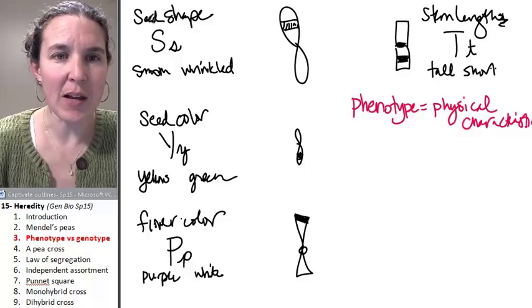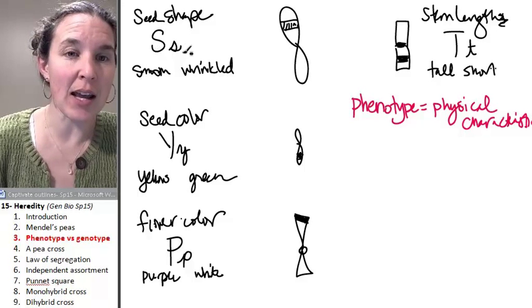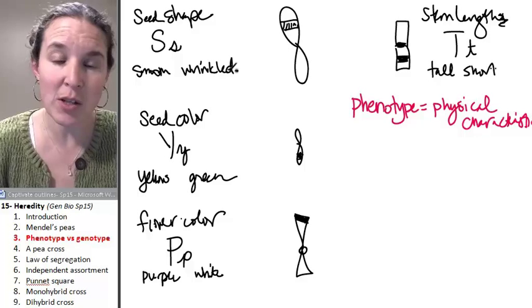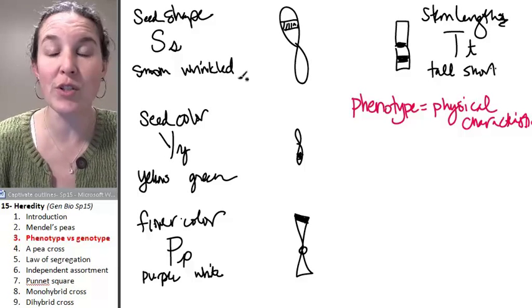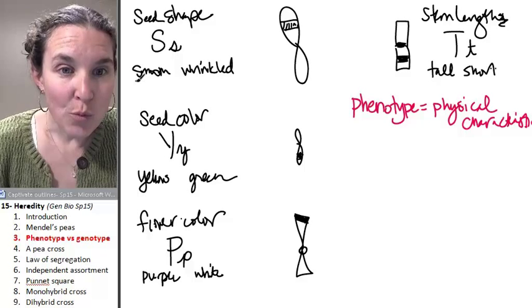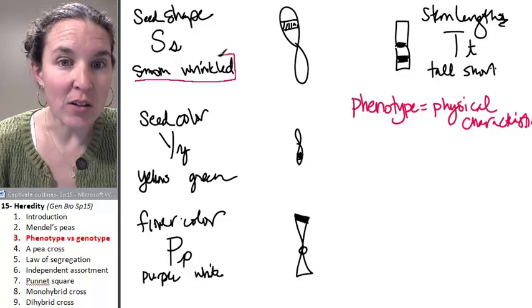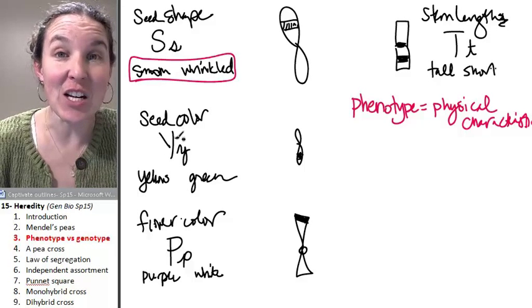Now, look at each of these. I've got seed shape, I've got SS, I've got a chromosome. I've got smooth versus wrinkled. Smooth versus wrinkled, that's the phenotype.